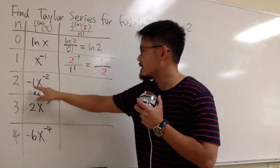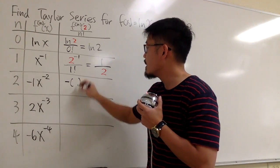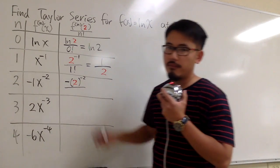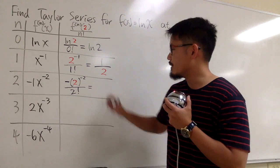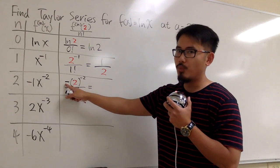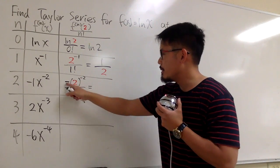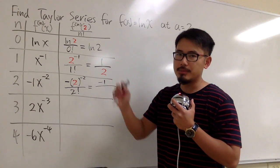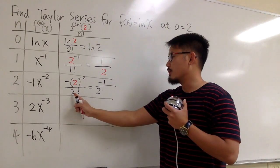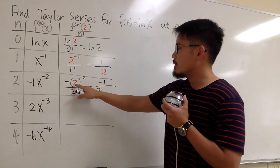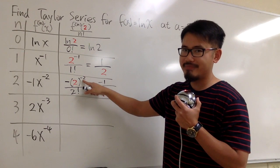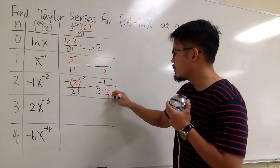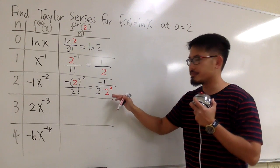For the next one, we plug in 2 into x. There is a negative 1 in front, so we have negative — open parentheses — 2 into x raised to the negative 2 power, then divide by 2 factorial. Now let's do this carefully. On top we have negative 1, and I'm going to bring the 2 to the negative 2 down to the denominator. The 2 factorial is 2 times 1, which is just 2. And 2 to the negative 2 power is 1 over 2 squared, so I write it as 2 to the second power in the denominator. We will see a pattern this way, much better.